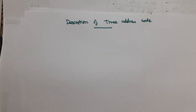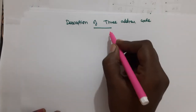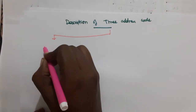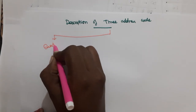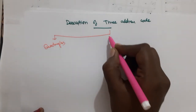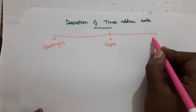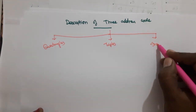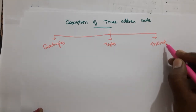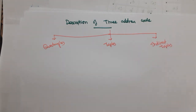In this video we will be discussing how to describe a three address code. A three address code is described in three ways: quadruple, triples, and indirect triples.